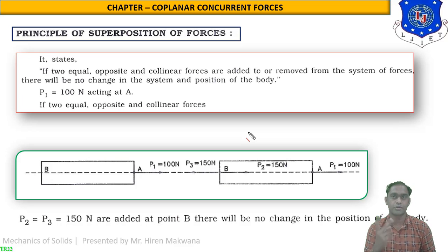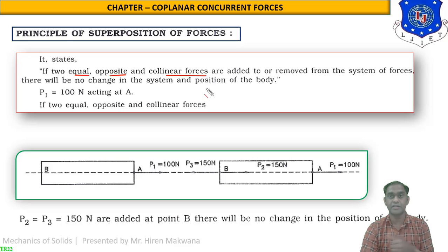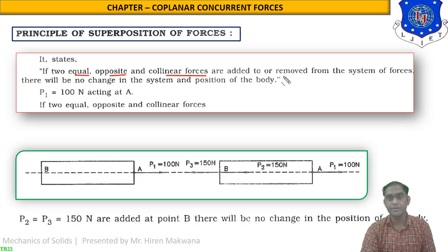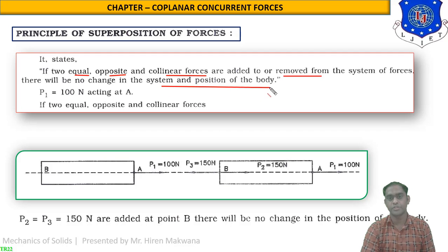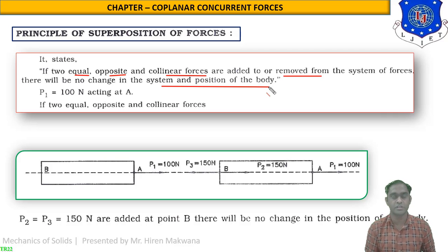The second theory for today is the principle of superposition of forces. The statement: if two equal, opposite, and collinear forces — equal meaning same value (e.g., 50N and 50N), opposite meaning left and right or tensile and compressive, and collinear meaning lying on the same line — are added to or removed from the system of forces, then there will be no change in the system and position of the body.